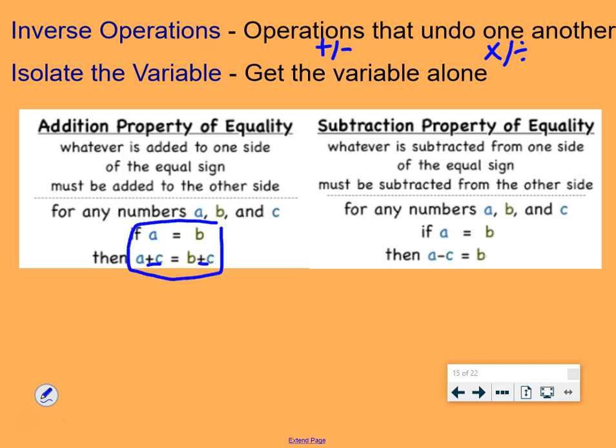To give you a numerical example, which sometimes helps a little bit better. If we have 5 equals 5. If I'm going to add 7 to the left side of the equal sign, I need to add 7 to the right side to keep it true. Otherwise, it's not true anymore. But, 5 plus 7 is 12, and 5 plus 7 is 12. So, adding 7 to both sides kept the equation equal.